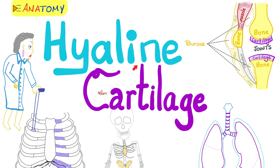You'll find hyaline cartilage in your trachea and bronchi. All of your laryngeal cartilages are hyaline, except the epiglottis. Your costal cartilages are also hyaline cartilages. And when a bone articulates with the next bone, those articular cartilages are also hyaline.